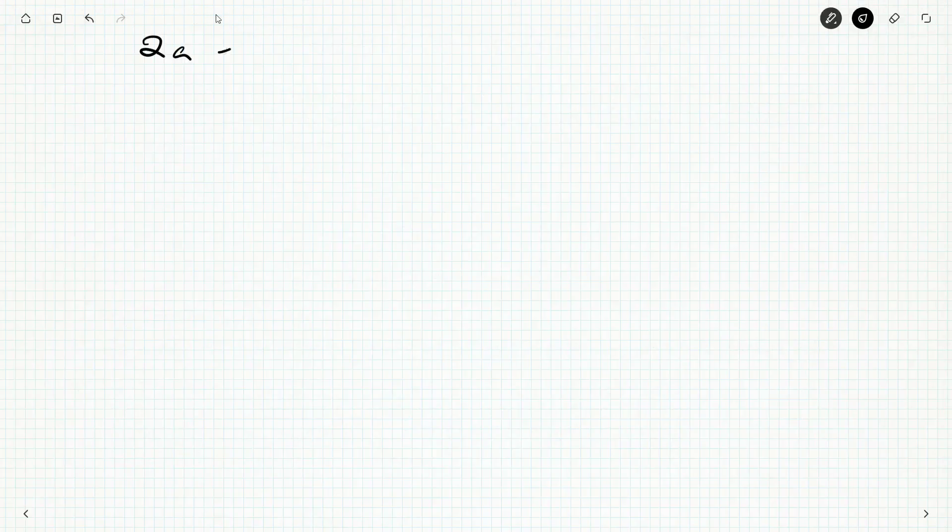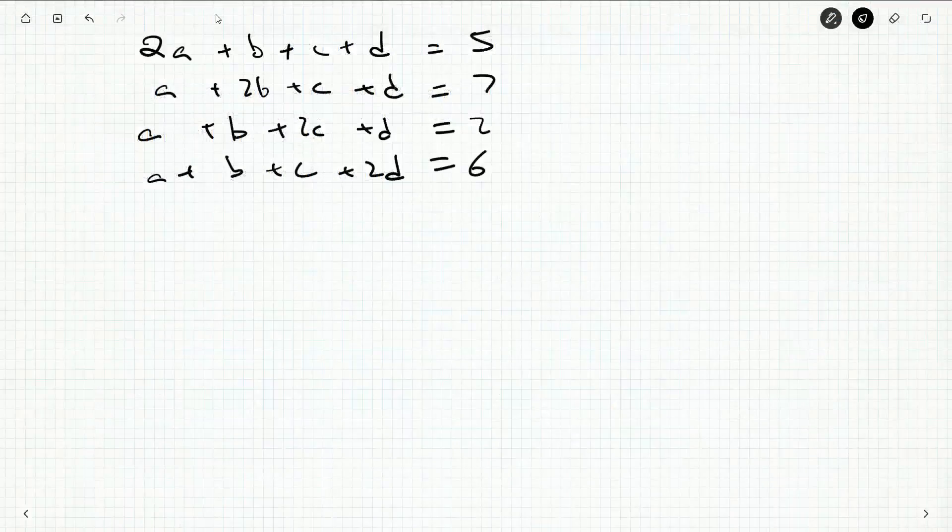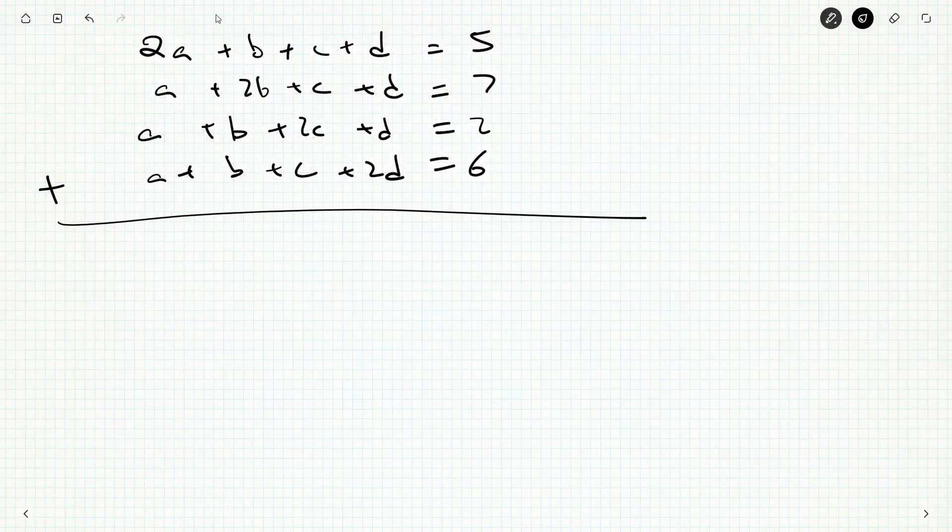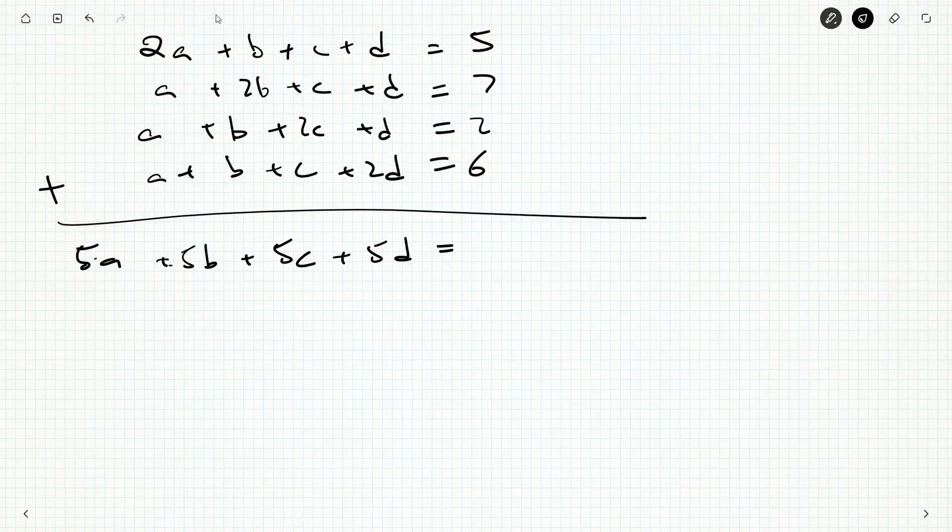We'll start with a first. So we've got 2a plus b plus c plus d equals 5. A plus 2b plus c plus d equals 7. A plus b plus 2c plus d equals 2. A plus b plus c plus 2d equals 6. Now when I see something like this, it's so nice. It's got such a wonderful pattern that I'm just going to add them all up, and I'm going to get five a's, five b's, five c's, and five d's, and then 12, 14, 20. So I can see that a plus b plus c plus d is going to be four.